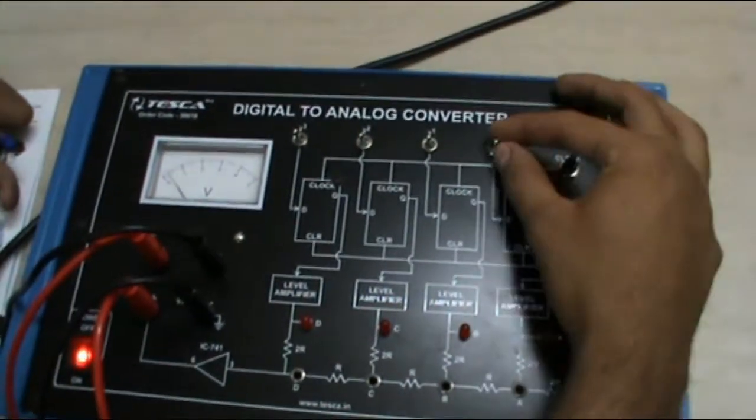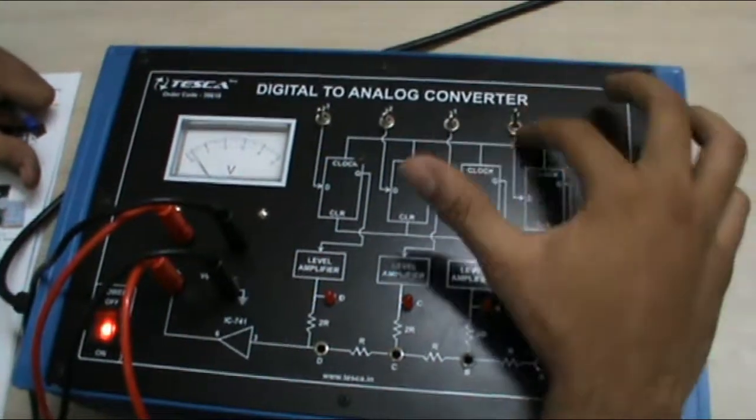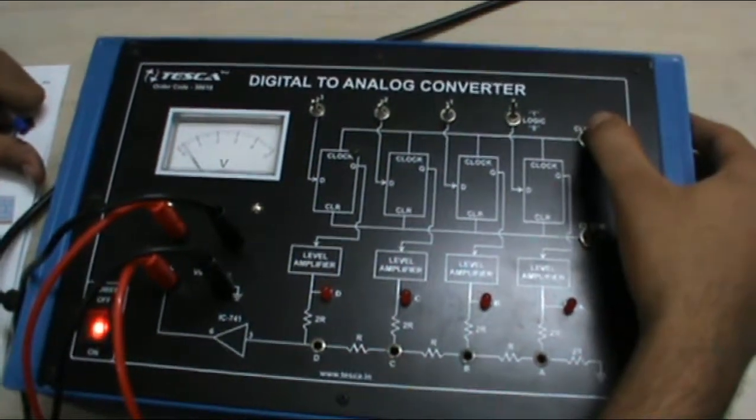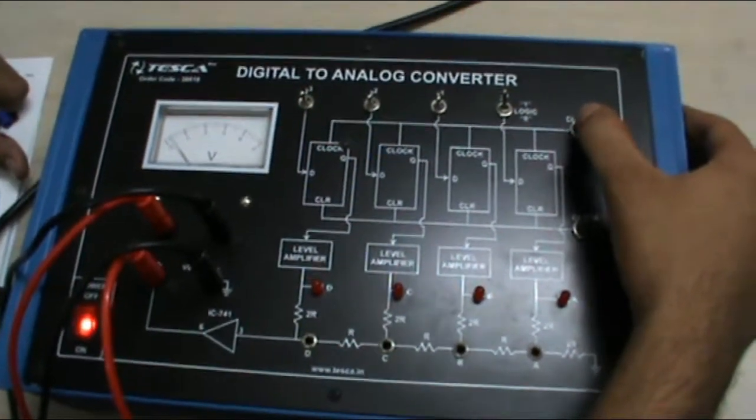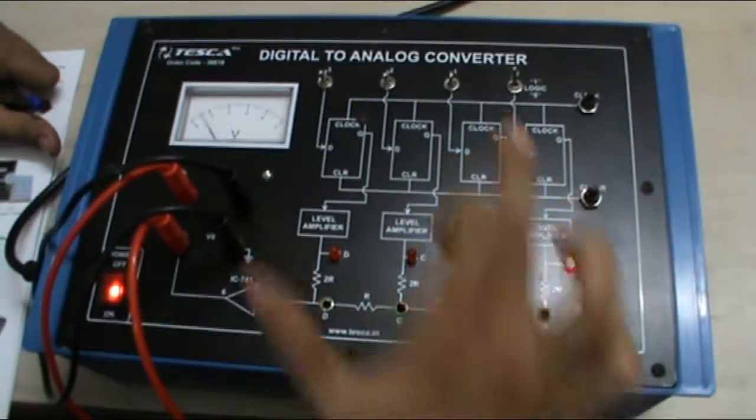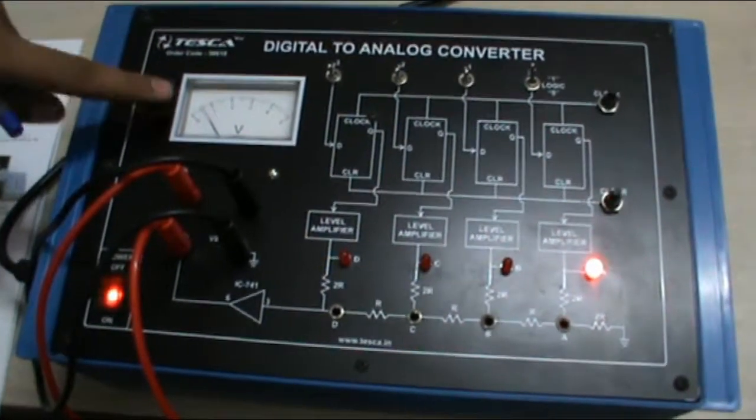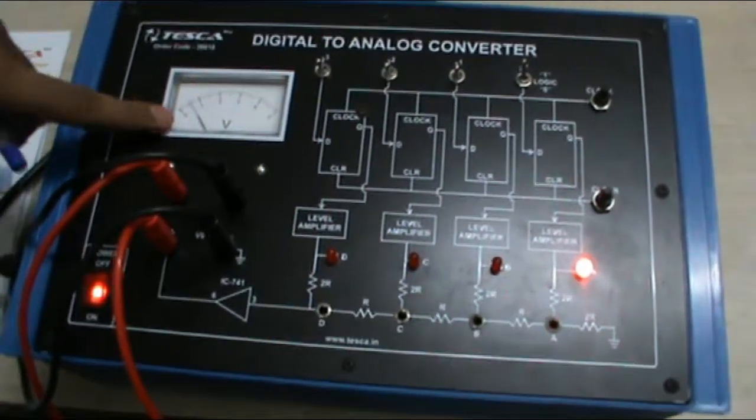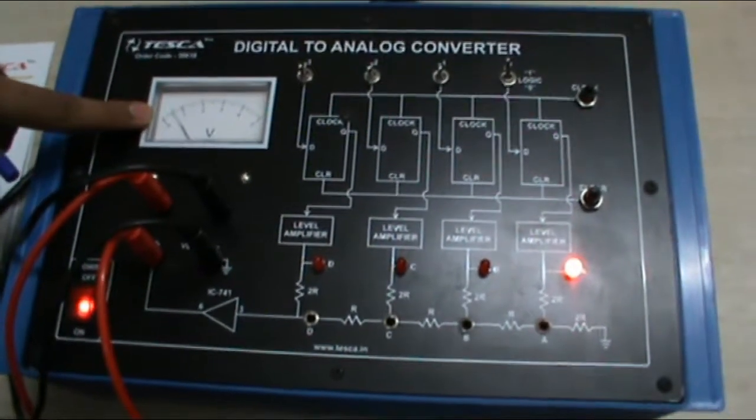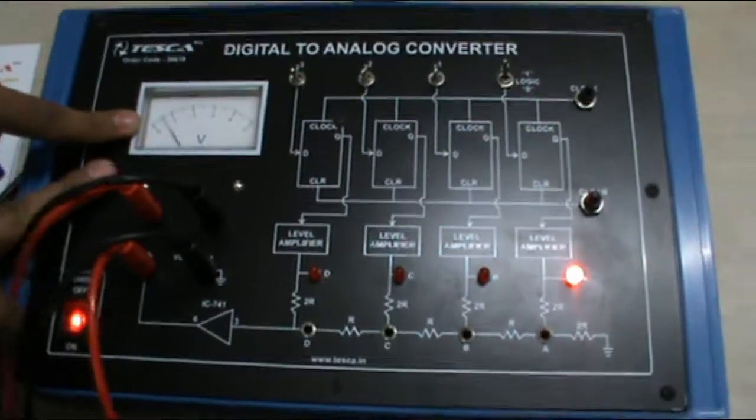Now, when we give input 1 in the digital form in binary and as we give clock pulse, LED will glow. This shows the input 0, this shows the input 0, this shows the input as 1 and the output in analog form can be seen in this voltmeter. As you can see the voltage of digital 1 value to the output voltage.